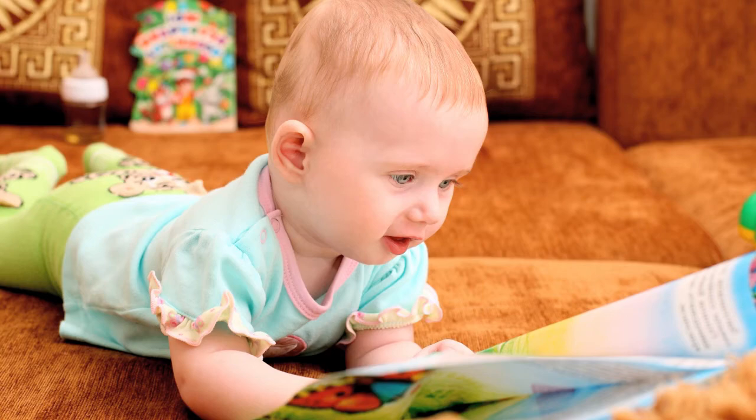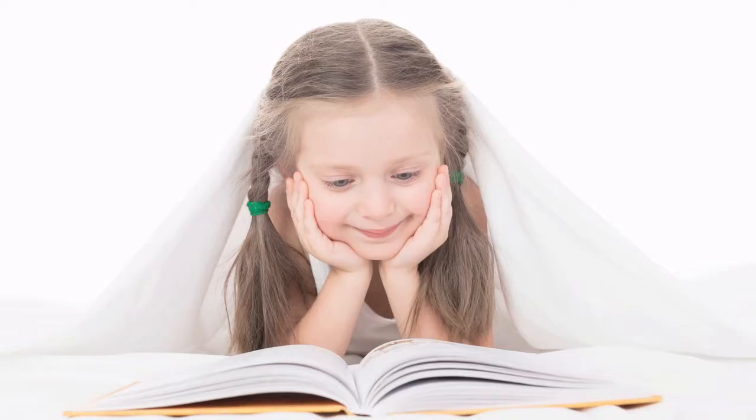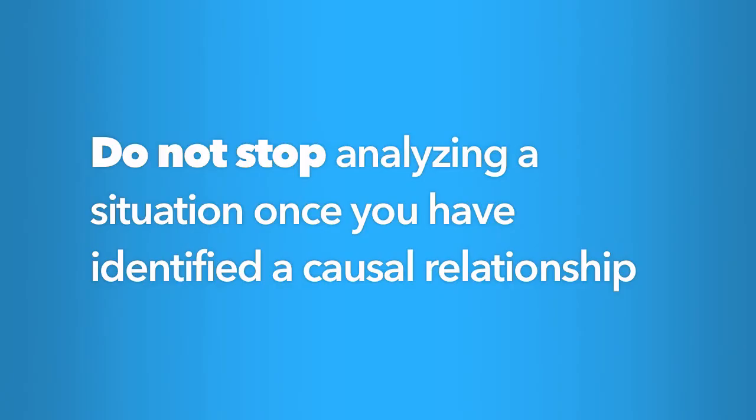Think about the following example. Children who read a lot at a young age get better at reading. As reading gets easier, children are more likely to read. These children, who are now reading more, get even better at reading, and so on. In order to avoid the error of missing out on such a mutual relationship, make sure you do not stop analyzing a situation once you've identified a causal relationship.